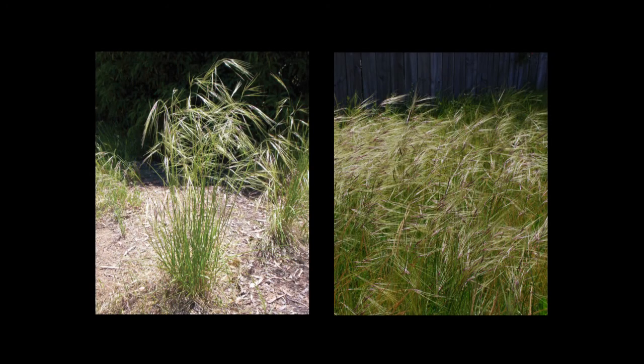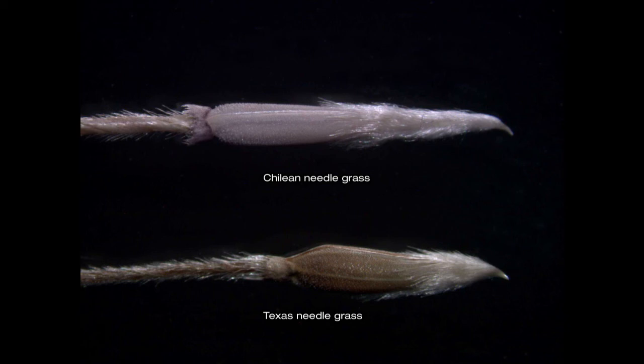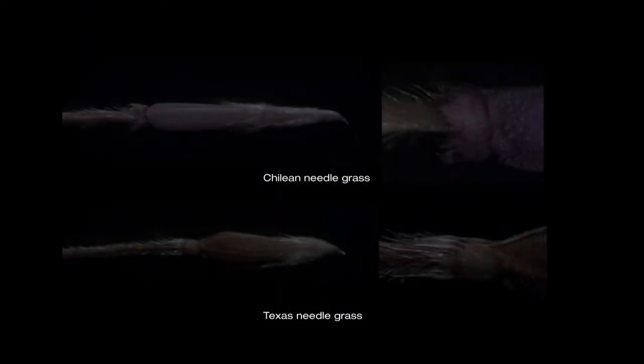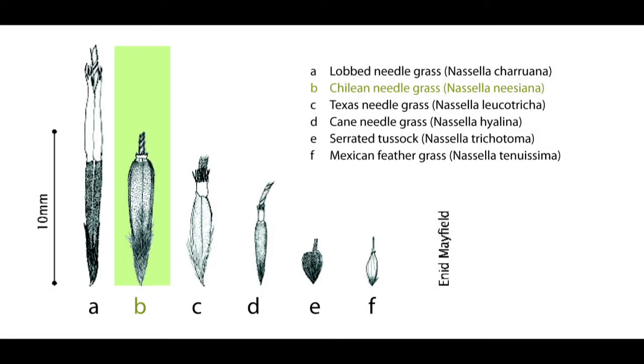It can look almost identical to CNG. The seed of Texas is marginally smaller and slightly asymmetrical in profile. The main difference between Texas and Chilean is the corona. Chilean has short, thicker hairs resembling a beer cap, while Texas has longer and finer hairs, approximately 3 millimeters long.